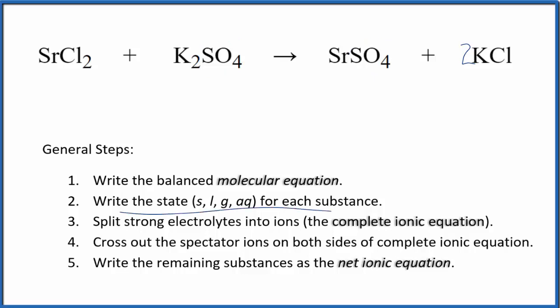Now we can write the state for each substance. Chlorides are very soluble. If you know your solubility rules, we'll put AQ for aqueous. Sulfates in general are soluble and potassium compounds very soluble. Again, aqueous. That's going to dissolve in water, dissociate into its ions. Strontium sulfate, that's a bit of an exception.